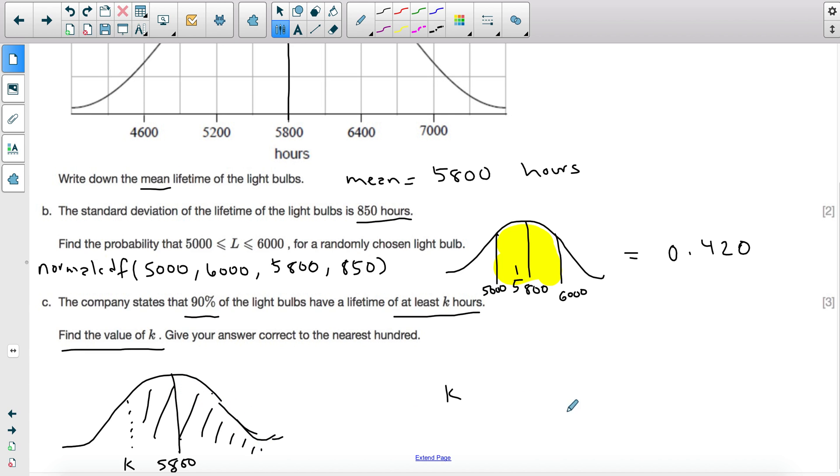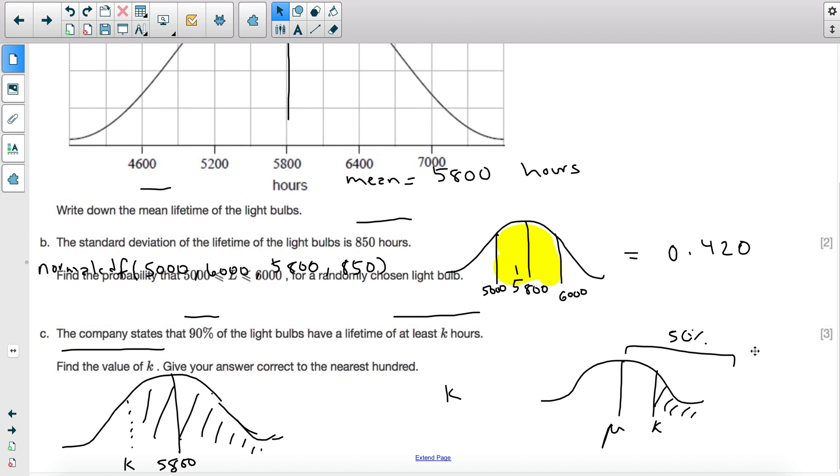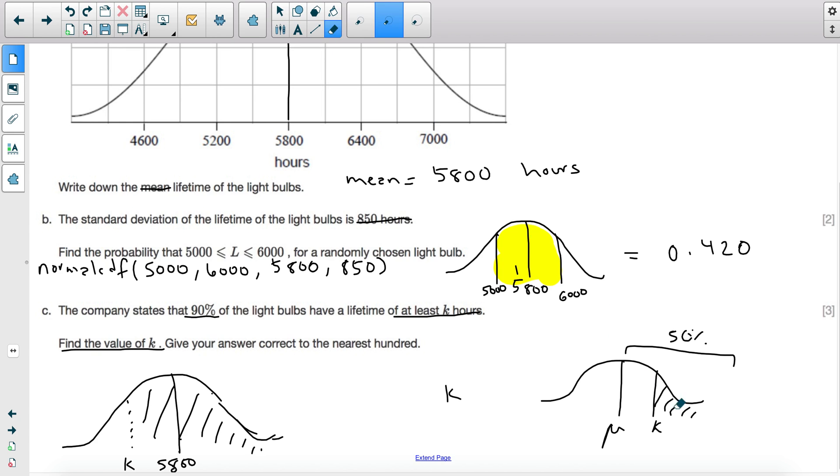Again, if I did put K here and I shaded this area, this area will definitely be less than 50% because this is 50%. And so I'm shading less than 50%, so it doesn't make sense. The area that I'm looking at is definitely more than 50%, so we ignore this part.